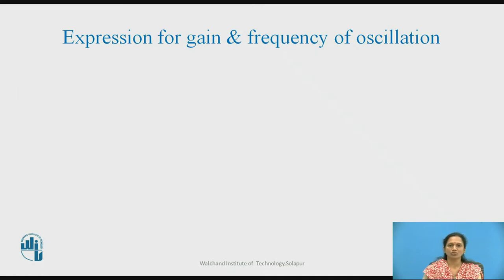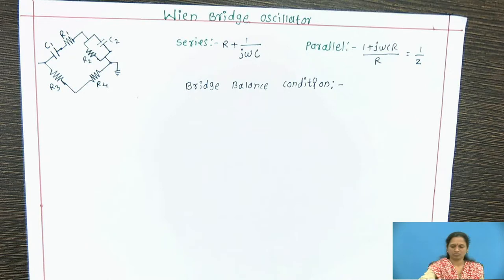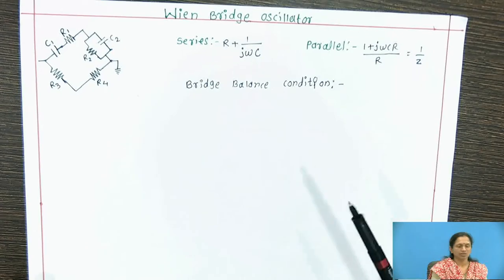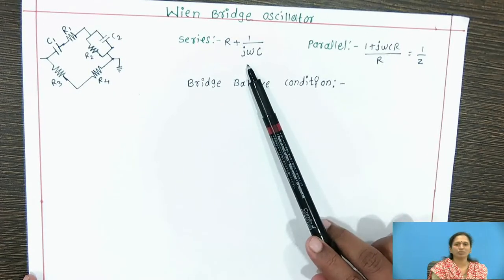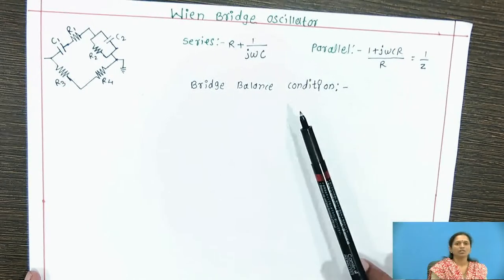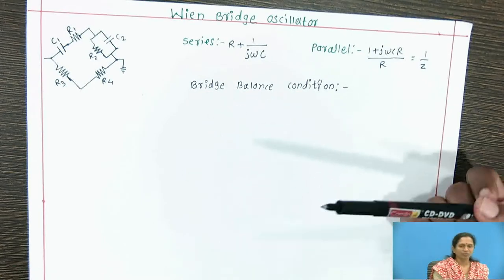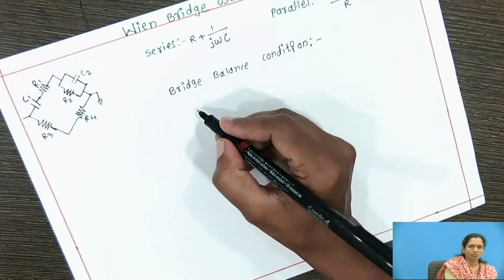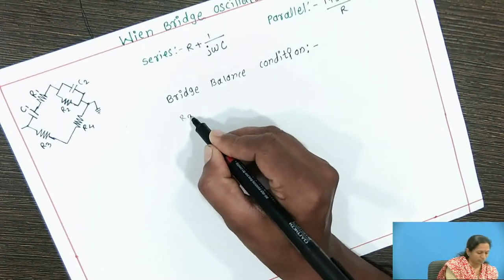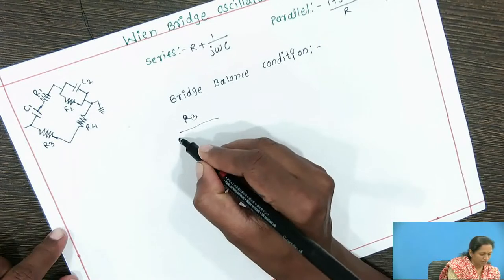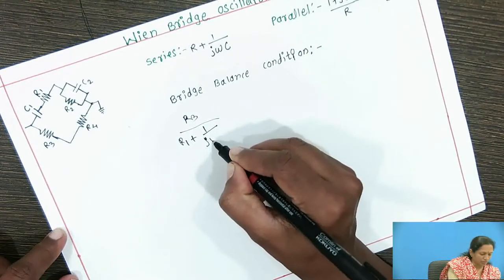Now we will see the expression for gain and frequency of oscillation. For the Wien Bridge Oscillator circuit, since R1 and R2 are connected in series, we can write Z1 as R plus 1/(jωC), whereas the parallel combination can be written as Z2 equal to R divided by (1 + jωCR). When the bridge gets balanced, its arm resistance will be equal to R3 multiplied by R2 divided by (R1 plus 1/(jωC1)).